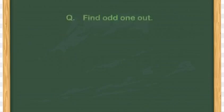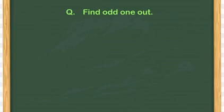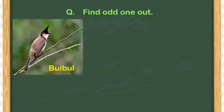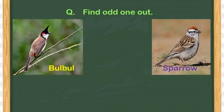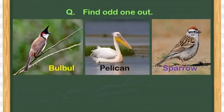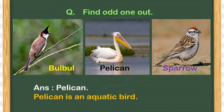Now it's quiz time. The question is: find the odd one out — Bulbul, Sparrow, and Pelican. The answer is Pelican, because Pelican is an aquatic bird, while the other two birds, Bulbul and Sparrow, can fly at lower heights.